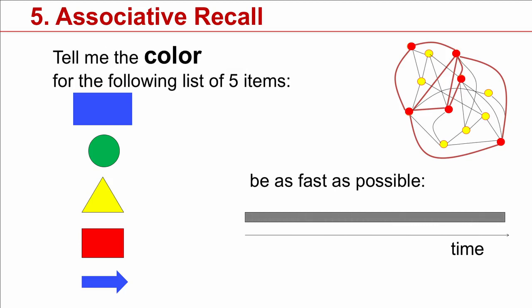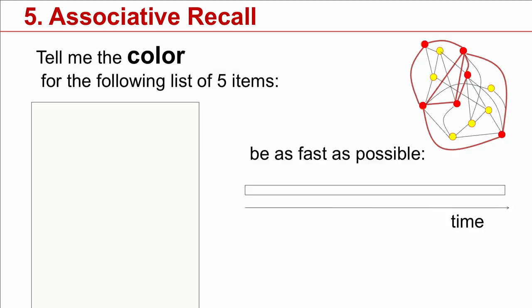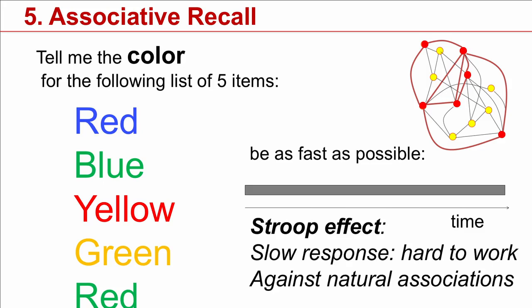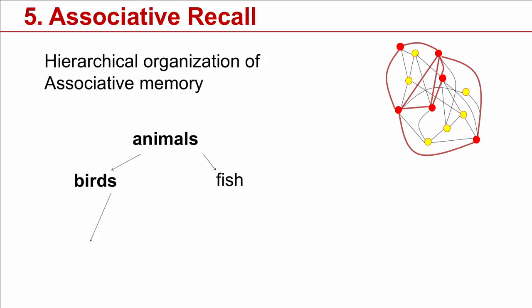Okay, it's an easy task. Now, let's redo this again and tell me the color of the following five items. Okay, so most likely you have seen that it's more difficult. It's more difficult because you have to work against the natural associations. This is called the Stroop effect. The point is that associations can be very strong and these associations can go between different aspects of the same concept.